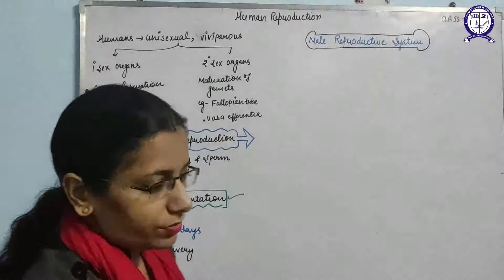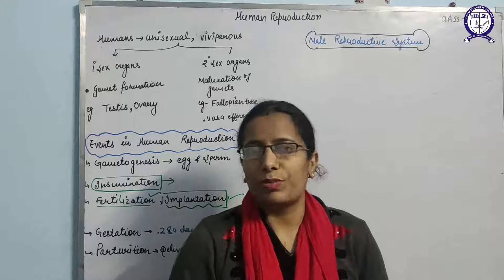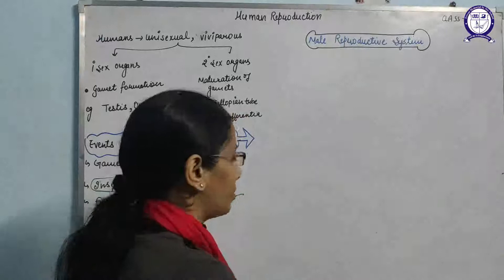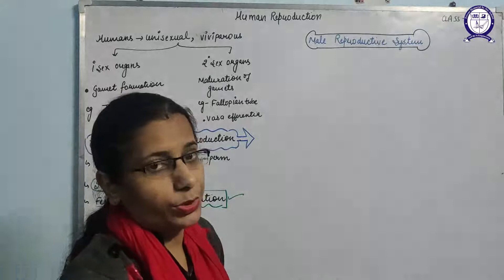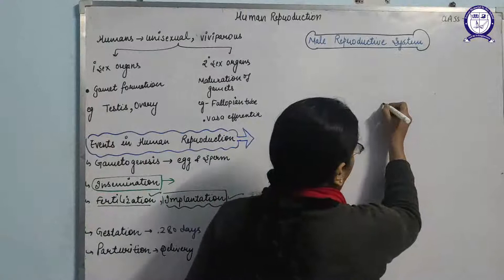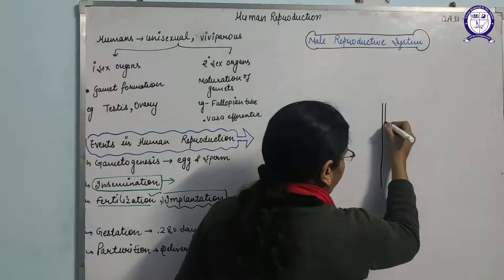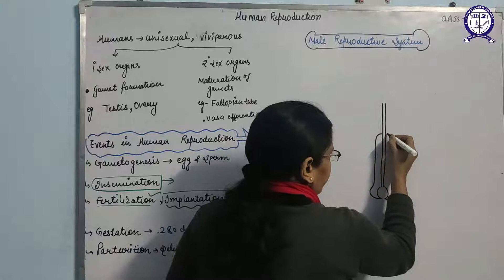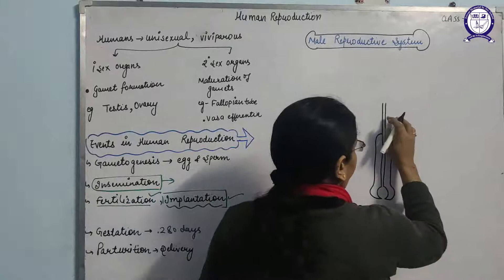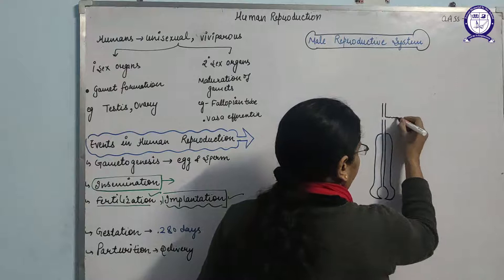We will now discuss the male and female reproductive systems one by one, starting with the male reproductive system. Students are often asked to draw a well-labeled diagram of the male reproductive system. Today we will learn how to draw it. First, draw the lines, then draw two bulbo-urethral glands, also known as Cowper's glands.